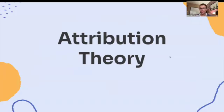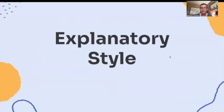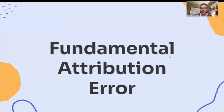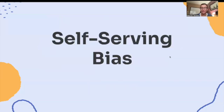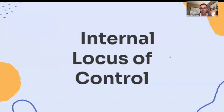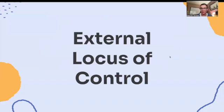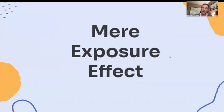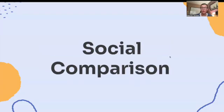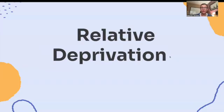Now let's have a look at each word individually. See if you can pause and say the definition and maybe an example to go with it, just to test your knowledge or to see if you've got them all written down on your cards or in your notes. Attribution theory. Explanatory style. Actor-observer bias. Fundamental attribution error. Self-serving bias. Locus of control. Internal locus of control. External locus of control. Mere exposure effect. Self-fulfilling prophecy. Social comparison. Relative deprivation.